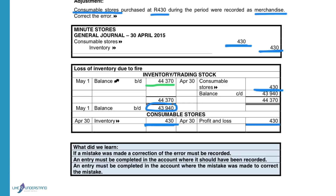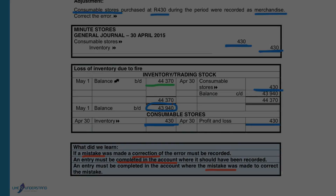So what did we learn today? If a mistake was made, a correction must be completed. An entry must be completed in the account where it was supposed to be — so you must go and complete it in the consumable stores account because that is where it was supposed to be. Then the entry must be completed in the account where the mistake was made to correct it. Because we made a mistake in the inventory account, we have to go and take it out on the credit side of the inventory account.